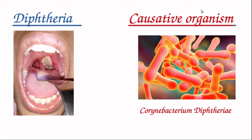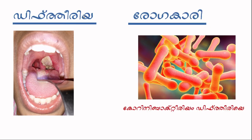The causative organism of Diphtheria is shown here - it is Corynebacterium diphtheriae. So Diphtheria is a bacterial disease and it is caused by the bacterium named Corynebacterium diphtheriae.